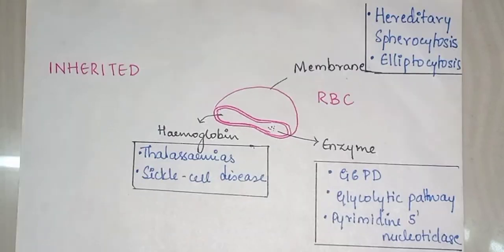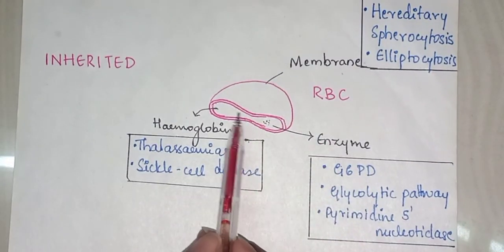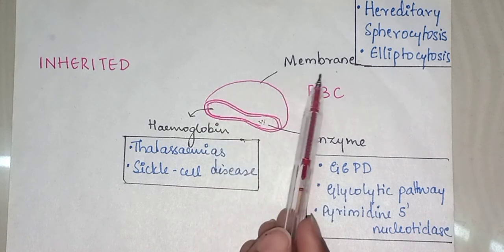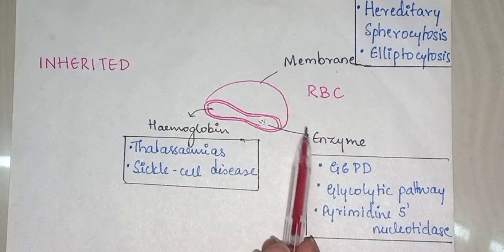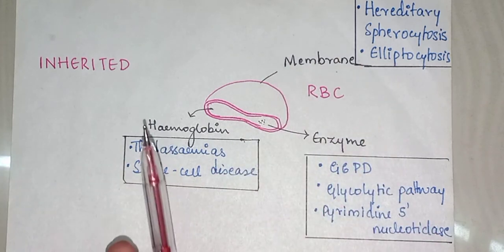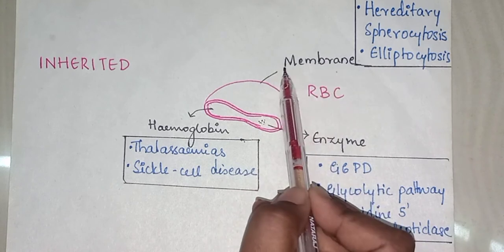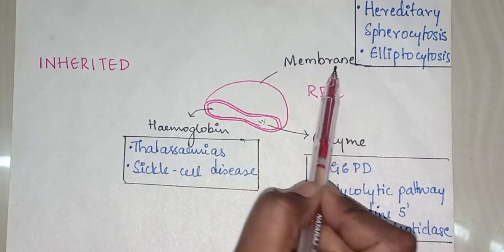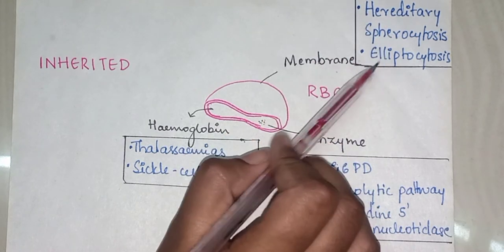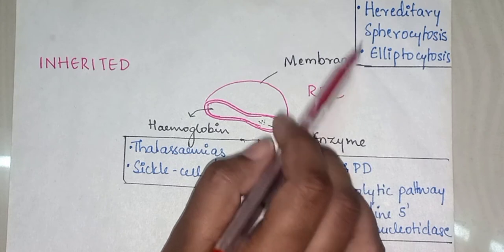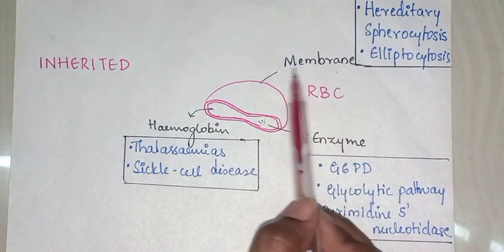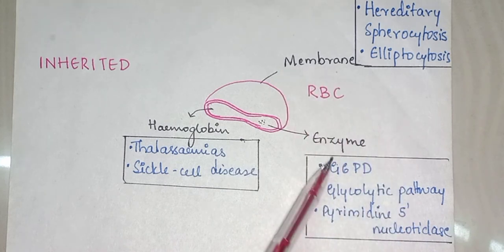In the inherited category, we have the RBC with a cell membrane, hemoglobin, and many enzymes. Whenever there is any abnormality in the membrane — such as hereditary spherocytosis and elliptocytosis — these types of hemolytic anemias are due to abnormality in the membrane of the RBC.